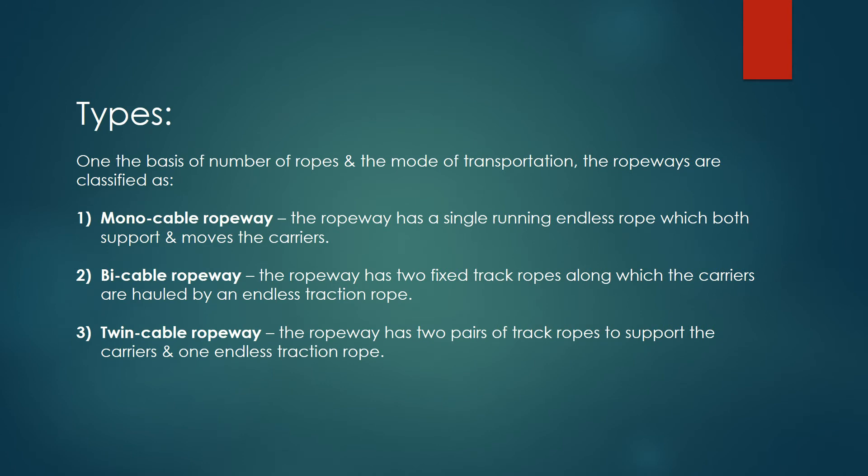Types. On the basis of number of ropes and the mode of transportation, the ropeways are classified as: Monocable Ropeway — the ropeway has a single running endless rope which both supports and moves the carriers.